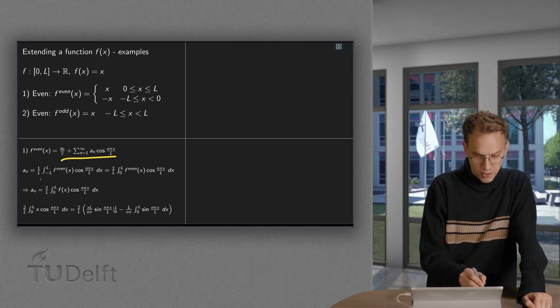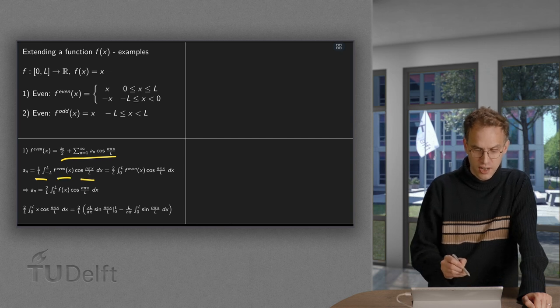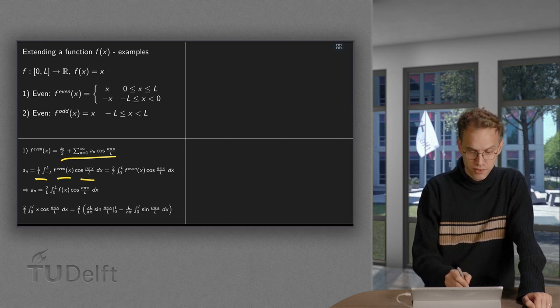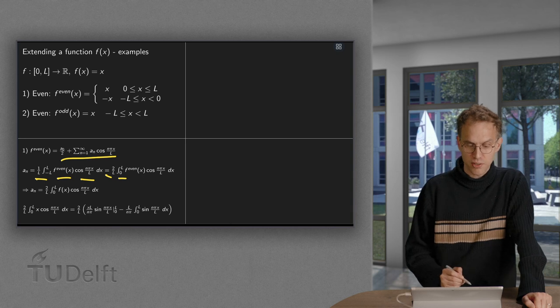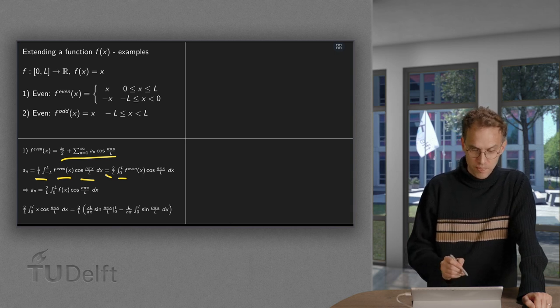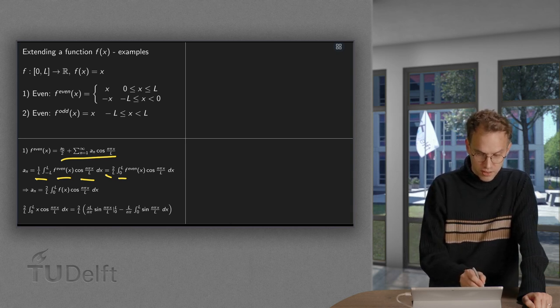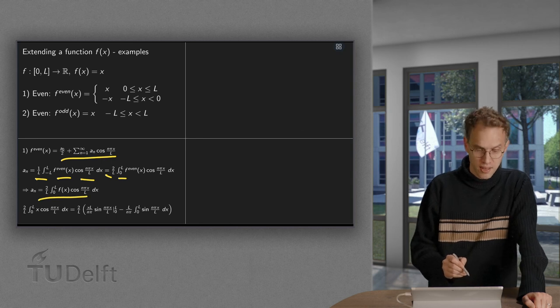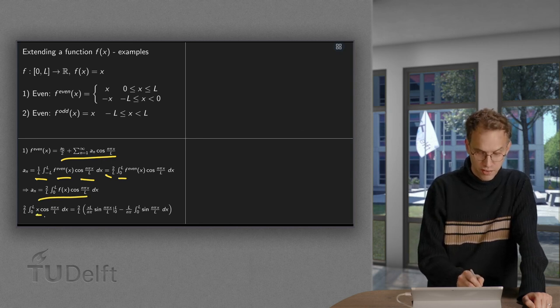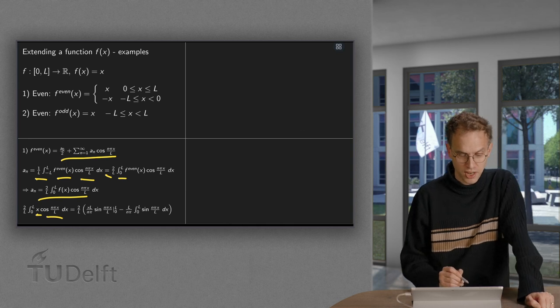a_n equals 1 over l, and integrate our f times the cosine. Because we are even, we have 2 over l, and we integrate from 0 to l. So there we have our equation for a_n. Our function f equals x, so we have to integrate x times the cosine.